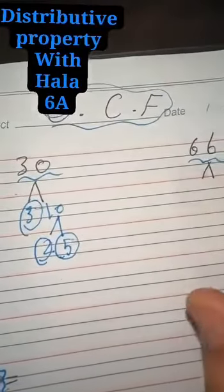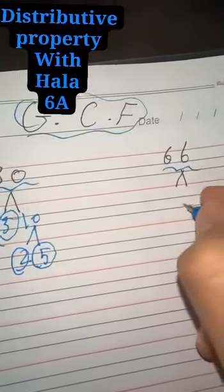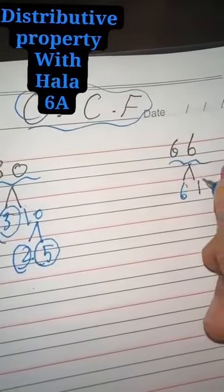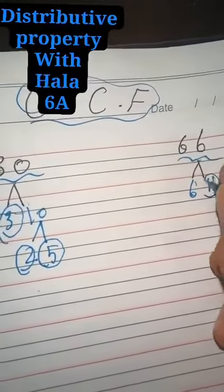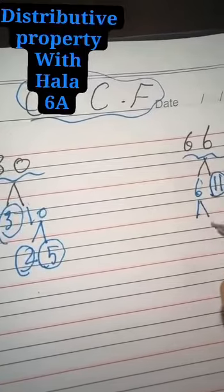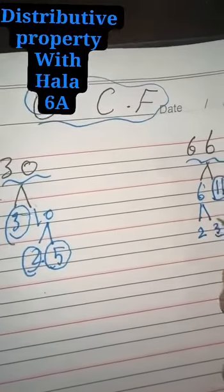And the same step that we did here, we will do it also here. 66 equals 6 and 11. We will circle 11 because it's a prime number and factorize 6 more. 6 equals 2 times 3. We will circle them.